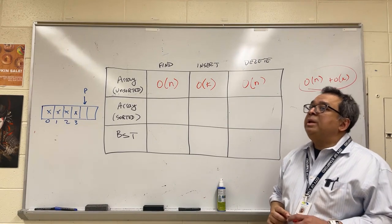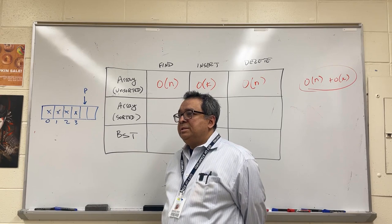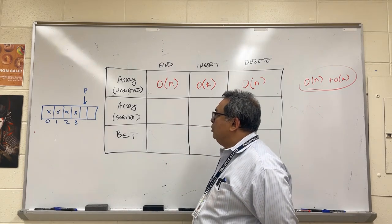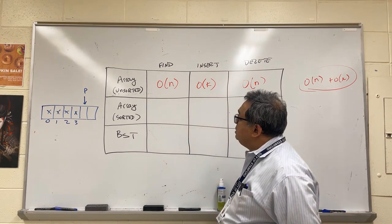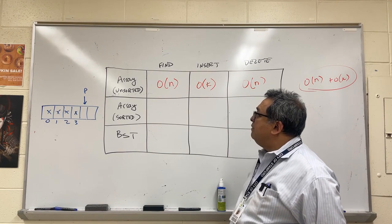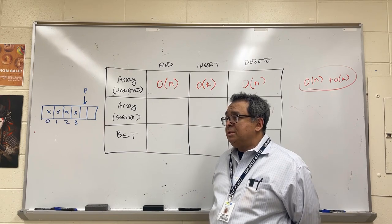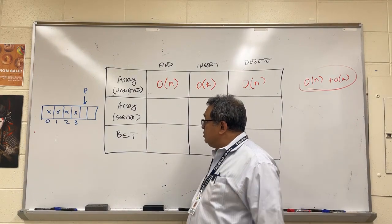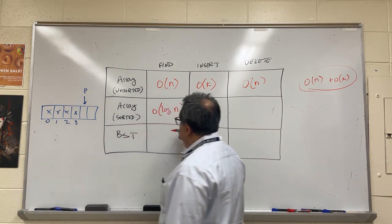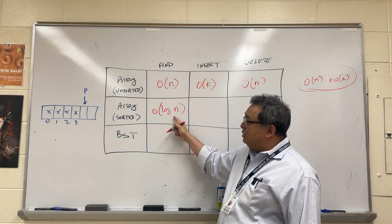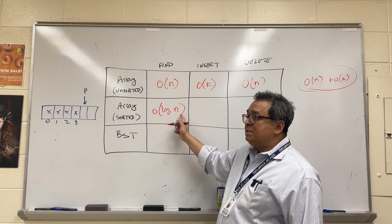Now I would like you to take a few minutes and chat with your partner about what this second row should be. All right. Let's see how well you remember your bisection search or binary search from CSP or CSA. First question is, how long will it take for me to find an item if the array is already sorted? So we agree then that it's going to be a log function. You may be tempted to put the base two here, but remember for big O, there is no base on the logarithm.